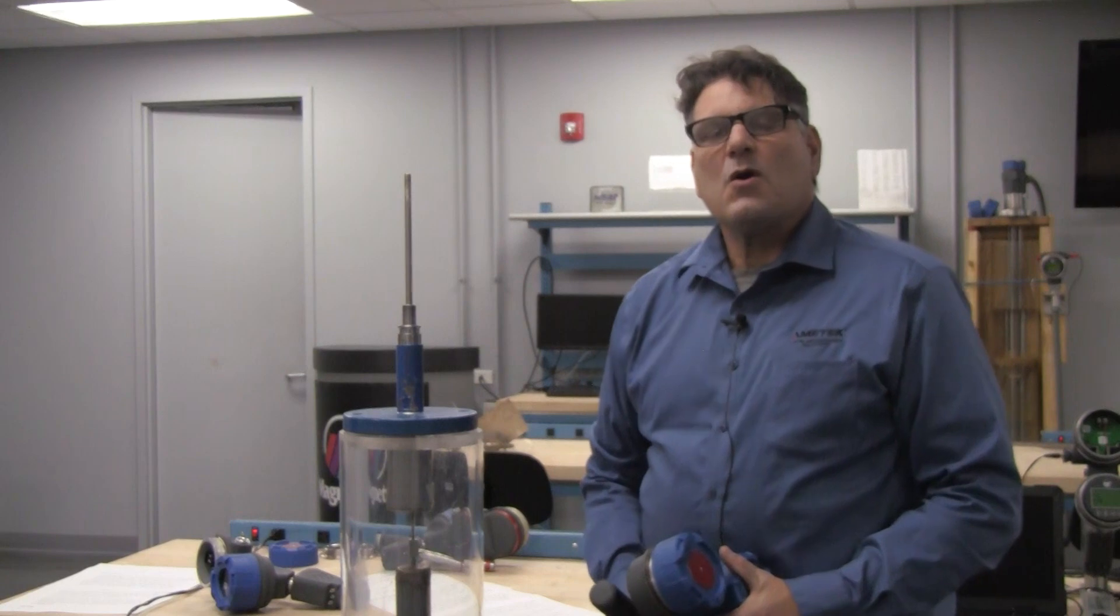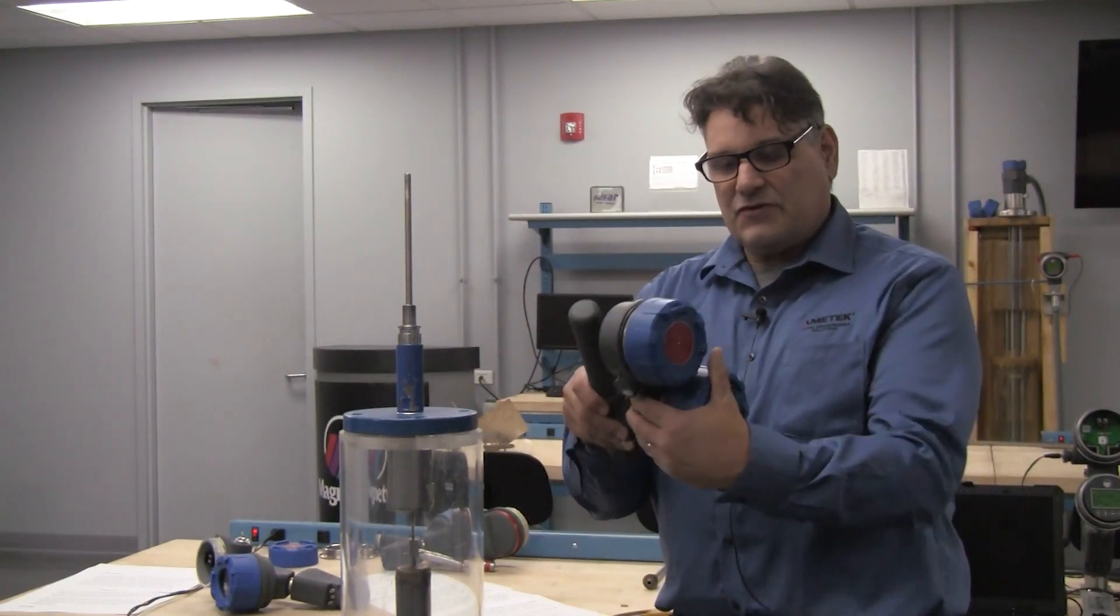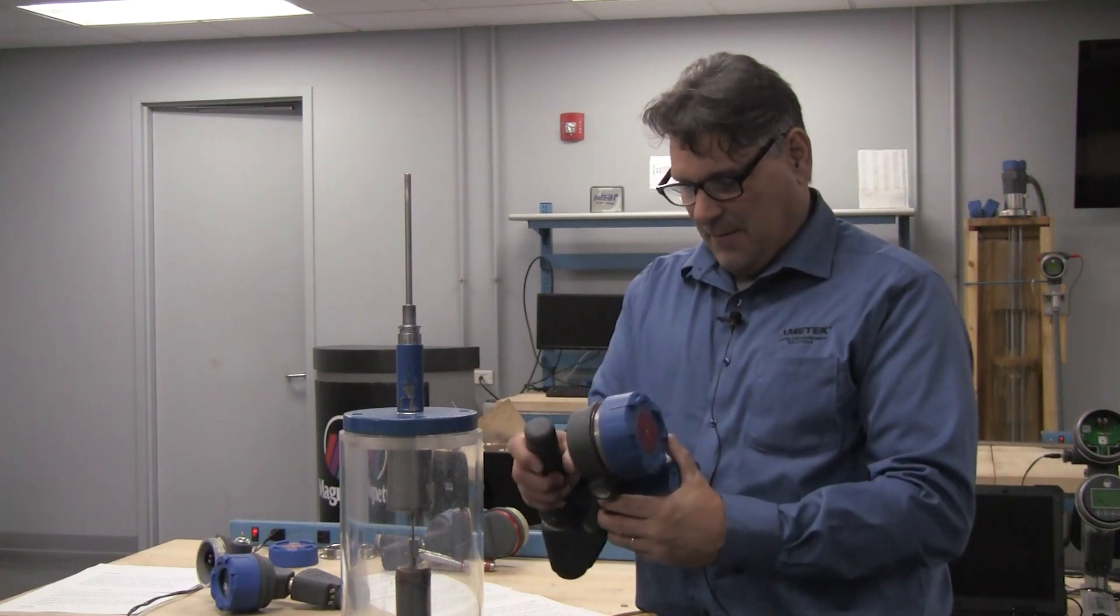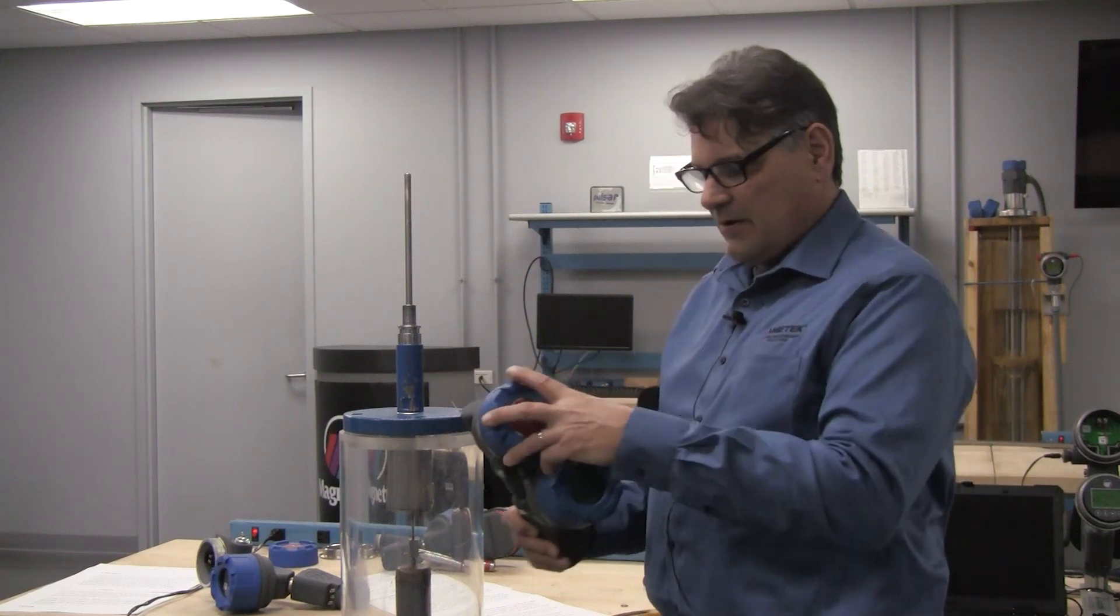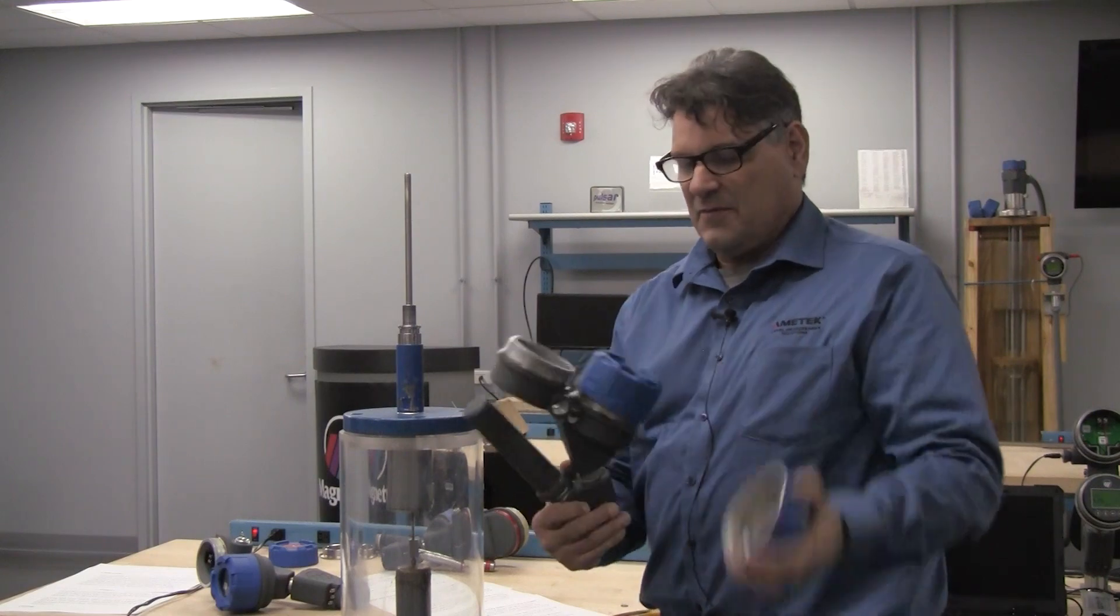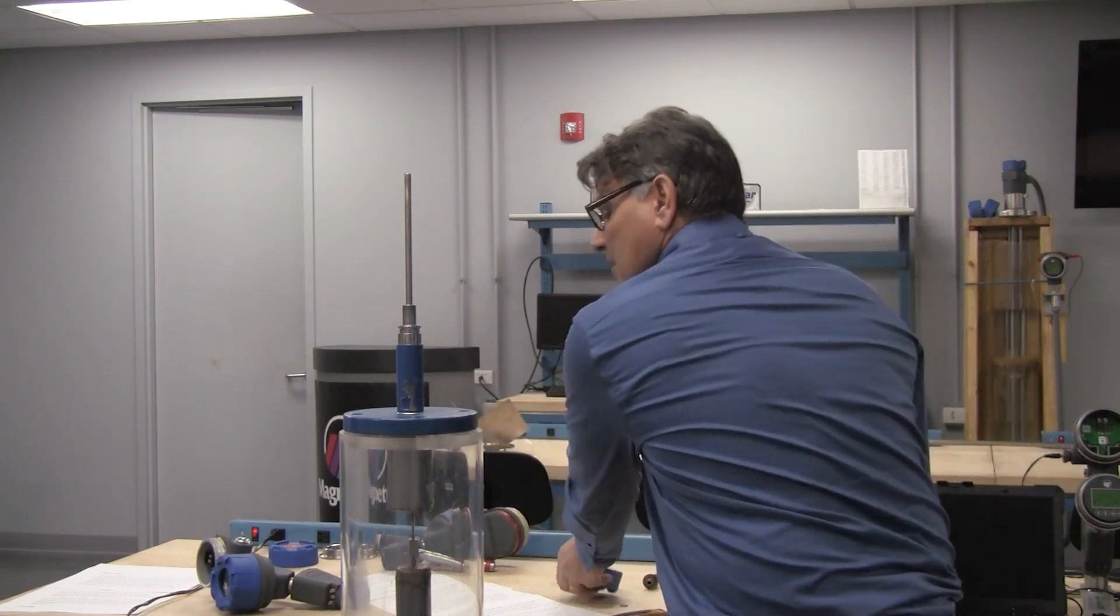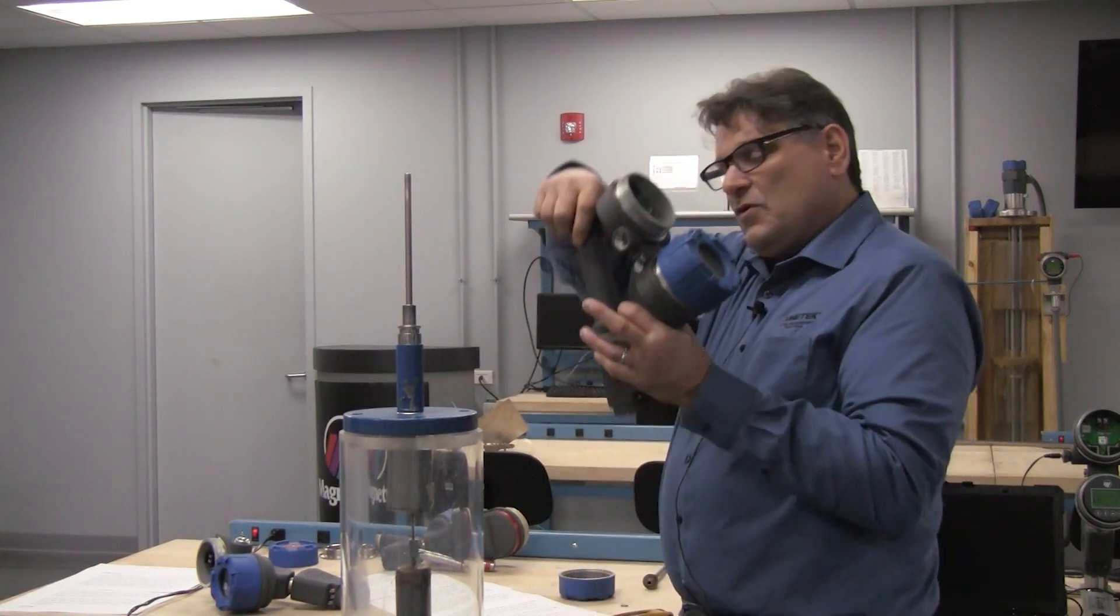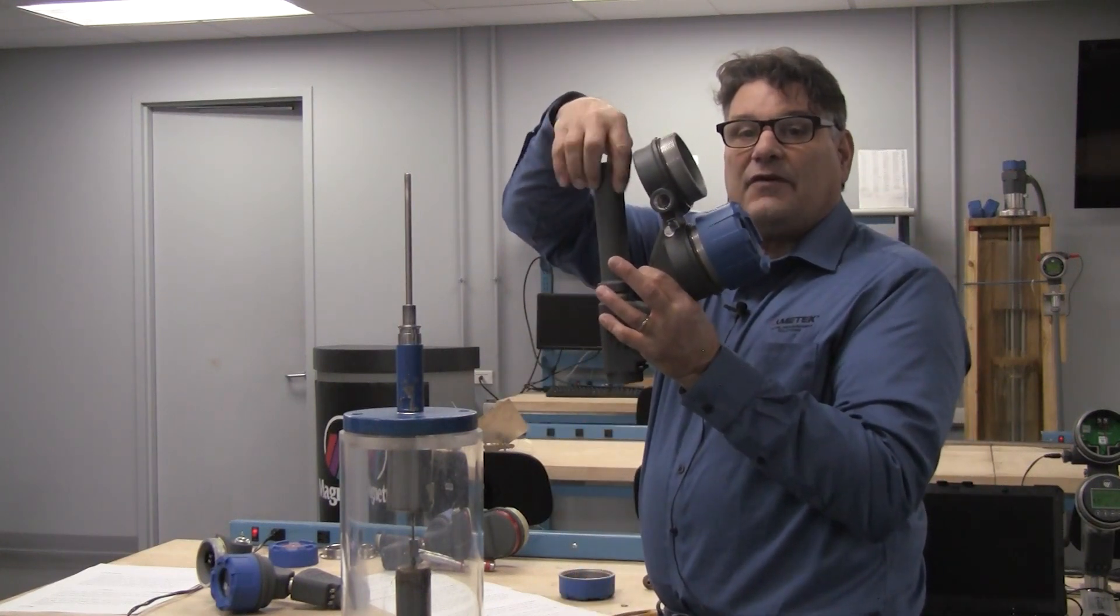Now that we've removed the old level transmitter, we're going to get the new transmitter and get it ready to install on the existing equipment. To start, you could remove the wiring cover from the top so when you get it on, you'll be able to wire that up. And then, you're going to remove the LVDT cover.